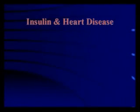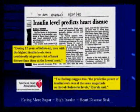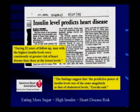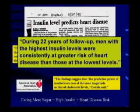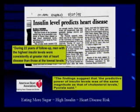What about heart disease? There was a study on heart disease and insulin — a 22-year study in Helsinki, Finland — with men aged 34 to 64. None of the participants showed any sign of heart disease, diabetes, or cardiovascular disease when the study started — that's called a prospective study. They watched them for 22 years and found that, especially in the first five years, if you had high insulin levels you were 300% more likely to die of a heart attack. The men with the highest insulin levels consistently had greater risk of developing heart disease. The findings suggest the predictive power of insulin was of the same magnitude as that of cholesterol levels. We already know high cholesterol equals heart disease risk — now we know high insulin equals risk for heart disease.